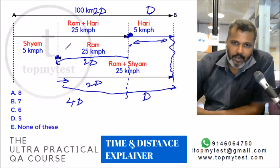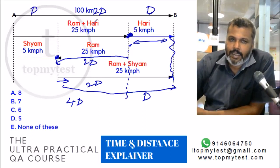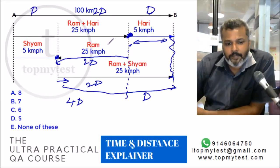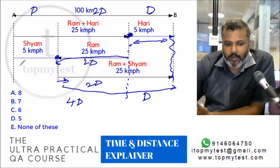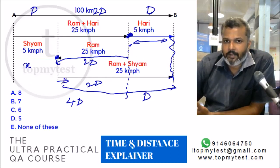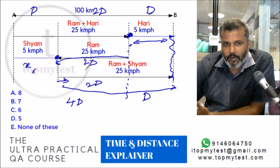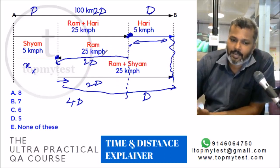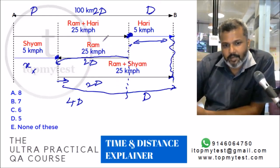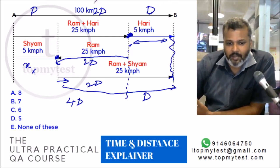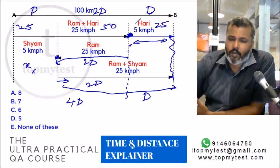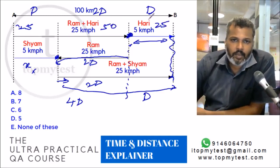By symmetry, the same argument applies to Sham's leg: if Sham walks distance X before pickup, Ram covers 5X total — X already covered, leaving 4X split as 2X back and 2X forward — giving X = D. So all three segments are equal: 25 km, 50 km, and 25 km. The full journey of 4D = 100 km confirms D = 25 km.